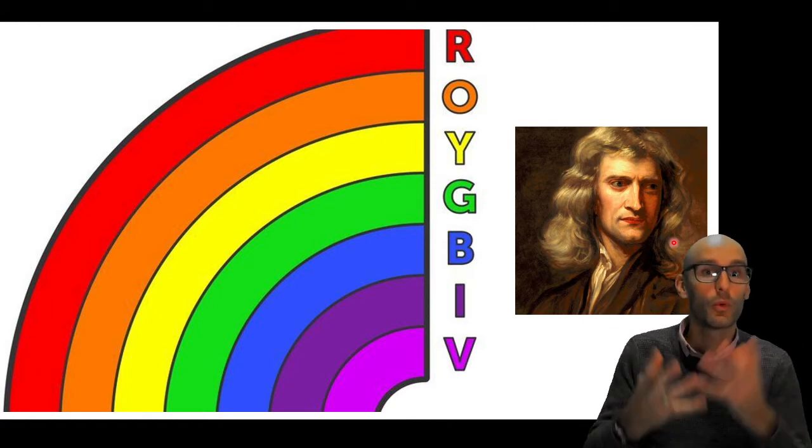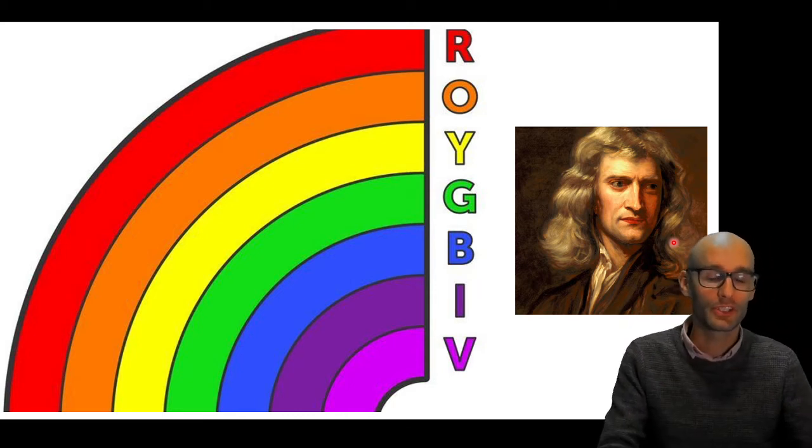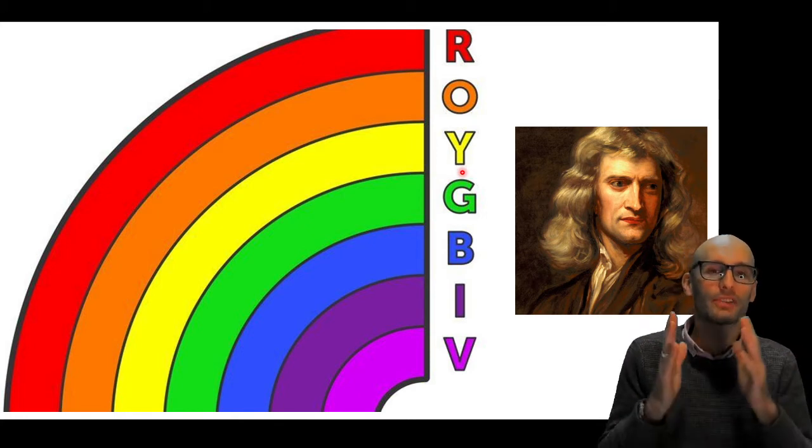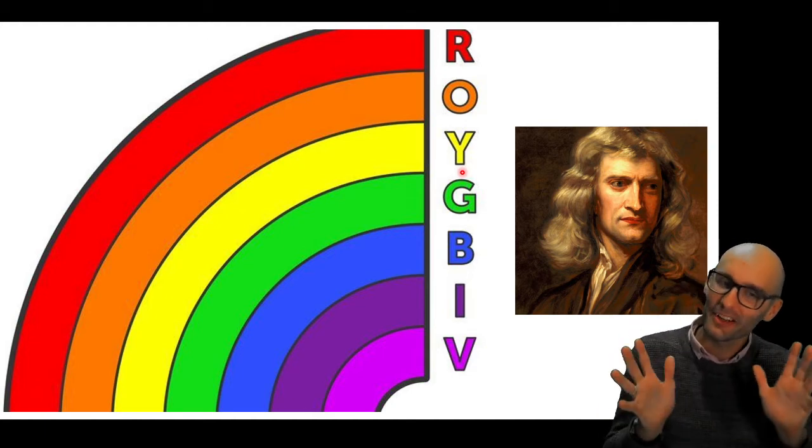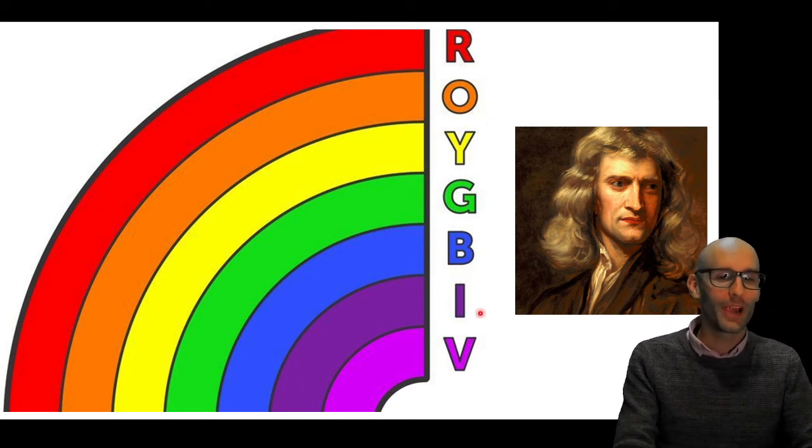God created the world and everything in the universe in seven days, according to the Bible. Isaac Newton was a very Christian man. And so he felt there had to be seven colors, because seven is a holy number, whereas six, six, six is not exactly the holiest of numbers. So he decided to cram another one in there.